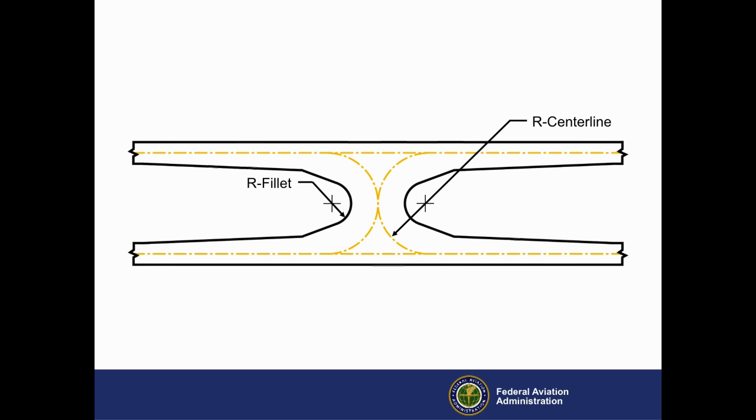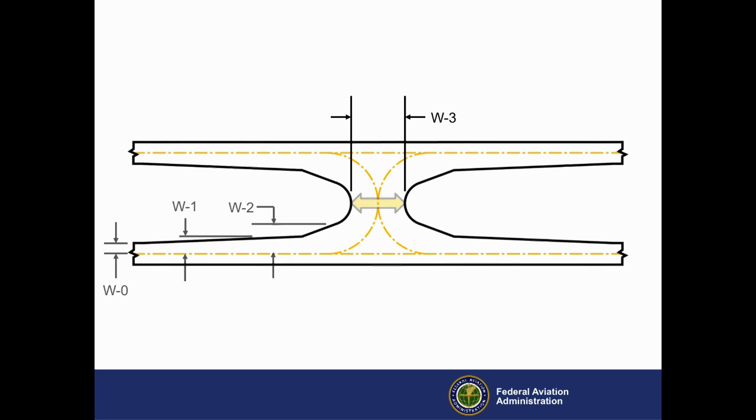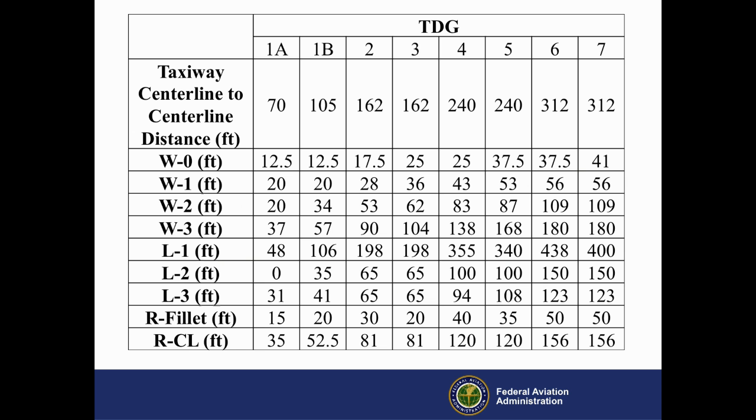Lengths L1 and L2 are the same as in a typical curve. In this special case, L3 is the distance along the centerline from the end of the second taper to the center of the crossover taxiway. The two radii, R-centerline and R-fillet, are once again similar to a typical curve. We also use four widths. The first three, W0, W1, and W2, are typical. The last width, W3, is the width of the crossover taxiway at its narrowest point. As shown here in this portion of a TDG table, the AC summarizes the centerline to centerline distance and related widths, lengths, and radii for each TDG.